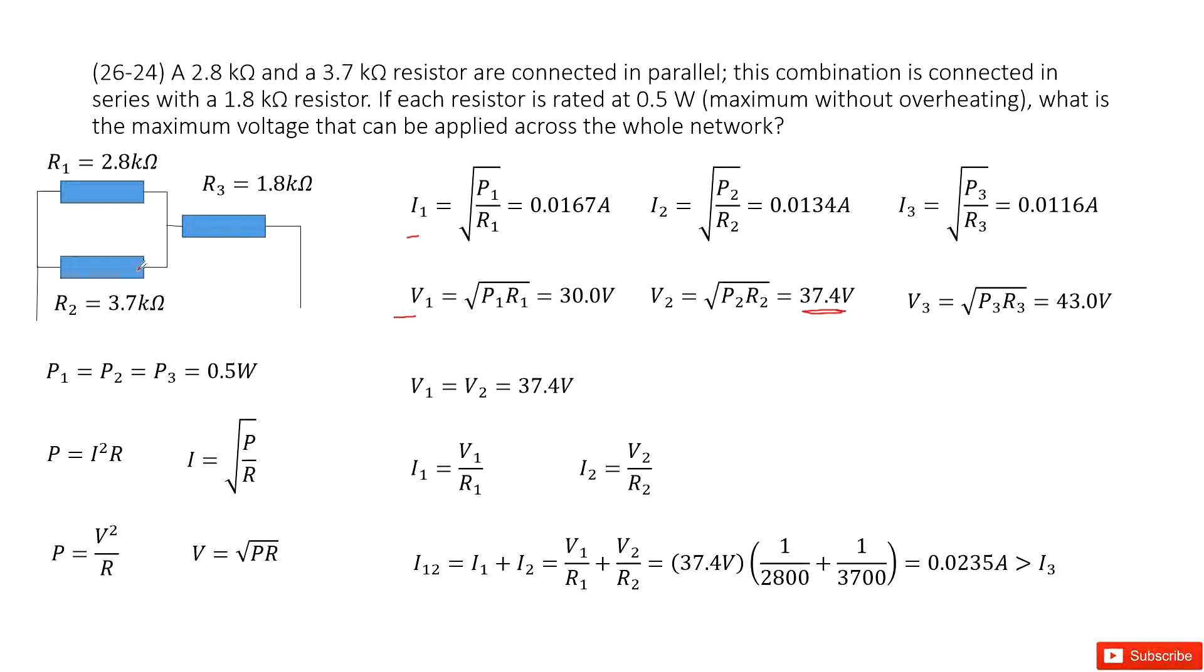That means we can apply the voltage 37.4 volts over resistor R1 and R2. This is 37.4 volts in this power pod from this point to this point.